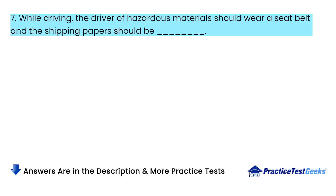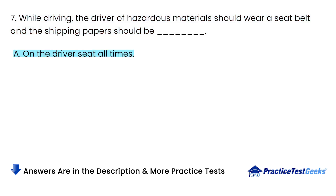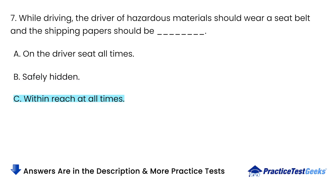While driving, the driver of hazardous materials should wear a seat belt, and the shipping papers should be: A. On the driver's seat at all times. B. Safely hidden. C. Within reach at all times. D. In back of the car.